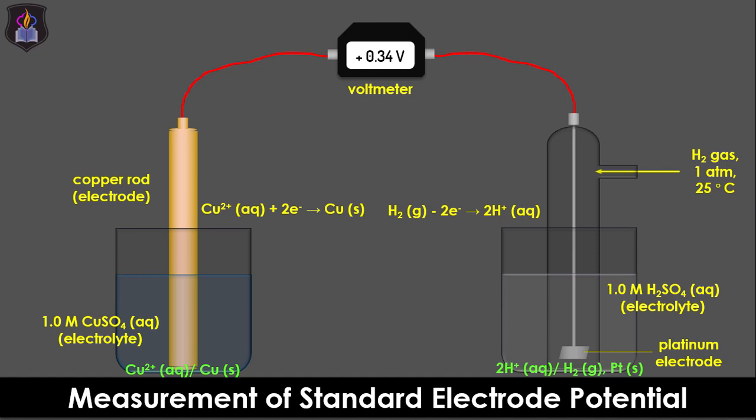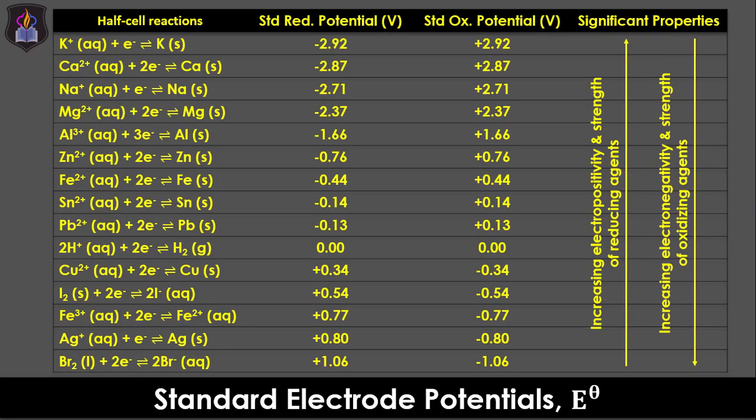The positive sign shows that electrons flow from the hydrogen electrode to the copper half cell, thereby making the latter the cathode and the hydrogen electrode the anode. Note that the higher the negative value of the reduction potential of an electrode, the more electropositive it is, and the higher the positive value of the reduction potential, the less electropositive the electrode is. Conversely, the higher the negative value of the oxidation potential of an electrode, the more electronegative the element is, and the higher the positive value of the oxidation potential, the less electronegative the element is.